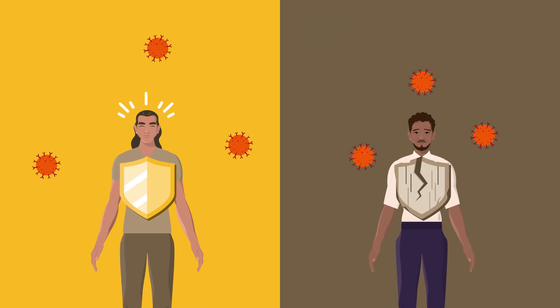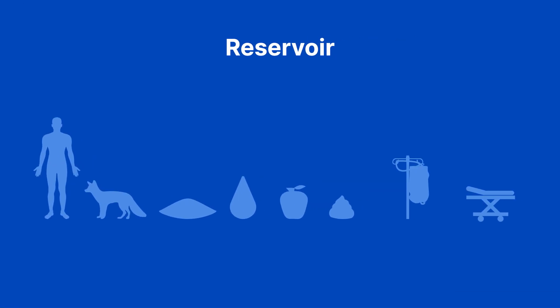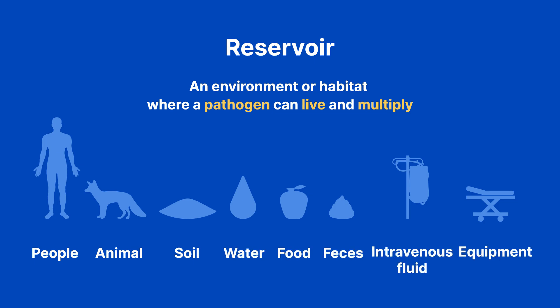The second link is the reservoir. A reservoir is an environment or habitat where a pathogen can live and multiply — imagine the home where the pathogen lives. Reservoirs can be things like people, animals, soil, water, food, feces, intravenous fluid, and equipment. The infectious agent depends on the reservoir for survival so it can live and multiply enough to be transmitted to a susceptible host.